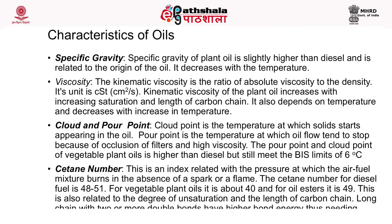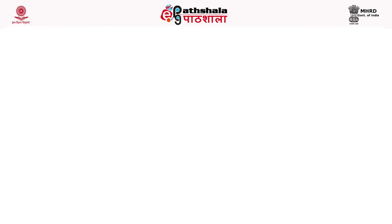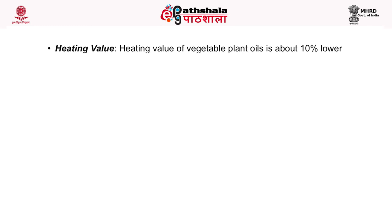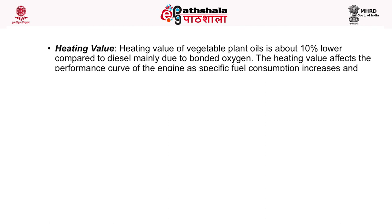The cetane number is an index related to the pressure at which the air-fuel mixture burns. The cetane number for diesel fuel is 48 to 51; for vegetable plant oil it is 40; and for oil esters it is 49. This is related to the degree of unsaturation and length of carbon chain — long chains with two or more double bonds have higher bond energy, needing higher temperature to vaporize. The heating value of plant oil is about 10% lower than diesel, mainly due to bonded oxygen, which increases specific fuel consumption and decreases power output.